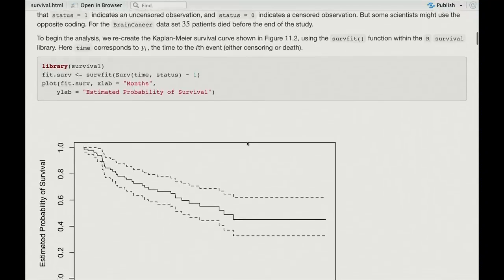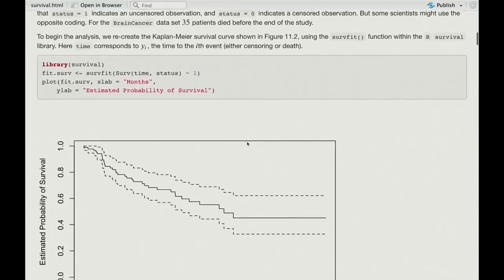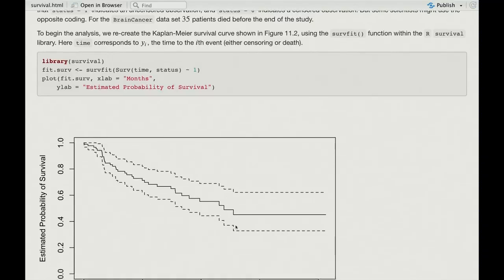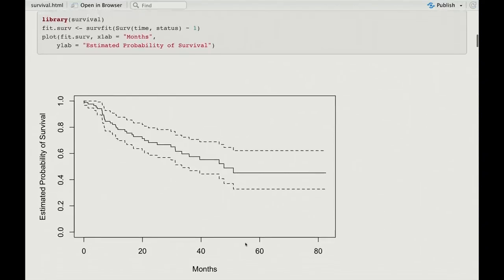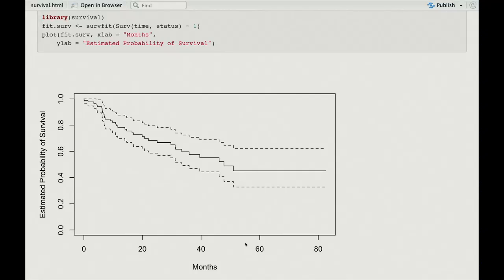And then you can plot it. There's a plot method. And it, by default, plots the confidence interval for the plot. I believe that's plus or minus two standard errors? I think so, yeah. Yeah. So that's a default. And so there you have the Kaplan-Meier curve.